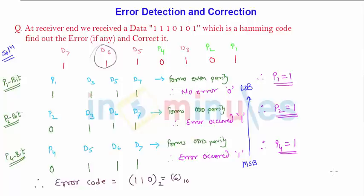Hence the new code will be: this 1 will remain as it is 1. This 1 will change to 0 because error has occurred. This will remain 1, 0. 1 will remain 1, 0 and 1.